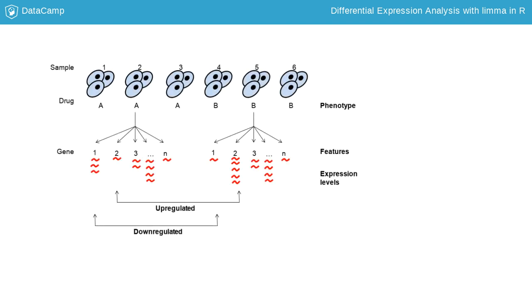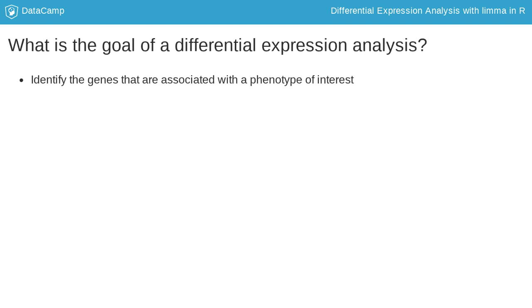Conversely, a lower expression level is called downregulated. The overall goal is to identify the genes that are associated with a phenotype of interest.